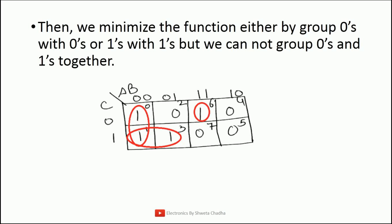The next rule is that for minimization, we always go for the grouping of 0s with 0s or 1s with 1s. It is not allowed to group 0s and 1s together. For the given K-map example, I am going to show you the groupings of 1s — that is for SOP. We can have a group of 2, then another group of 2, and the last group of 1 alone. The grouping of only 1s is allowed for SOP. Similarly, if you want to go for groupings of 0s — that is for POS — 0s are only allowed to group with other 0s.